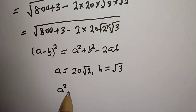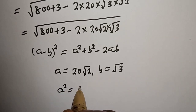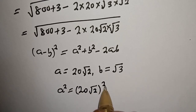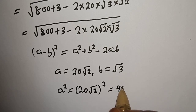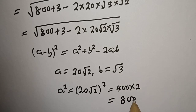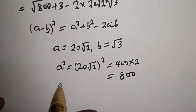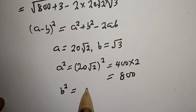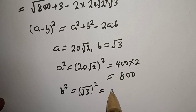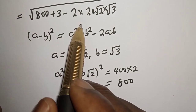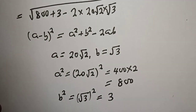We verify: a squared equals (20 root 2) squared equals 400 multiplied by 2, which is 800. Also, b squared equals (root 3) squared, which equals 3. Comparing all terms, everything matches.